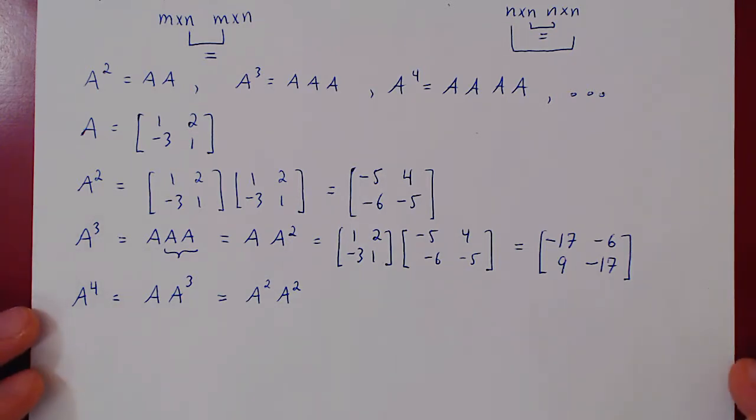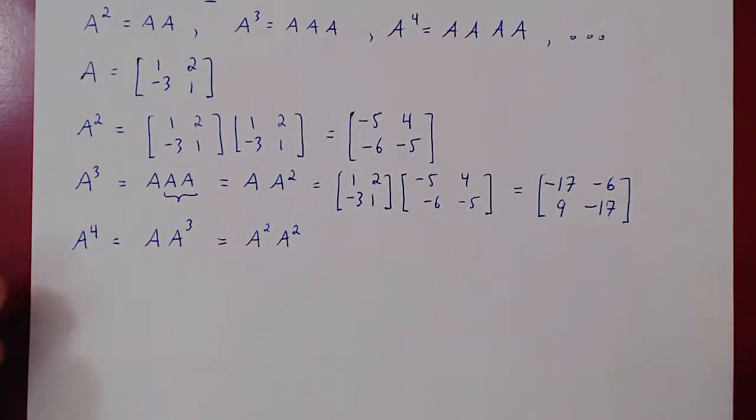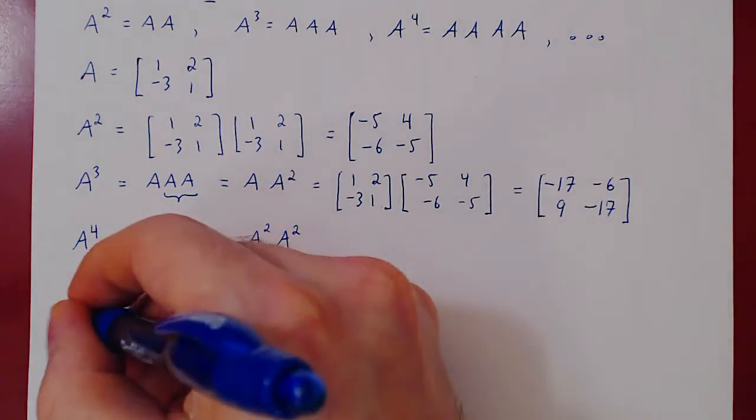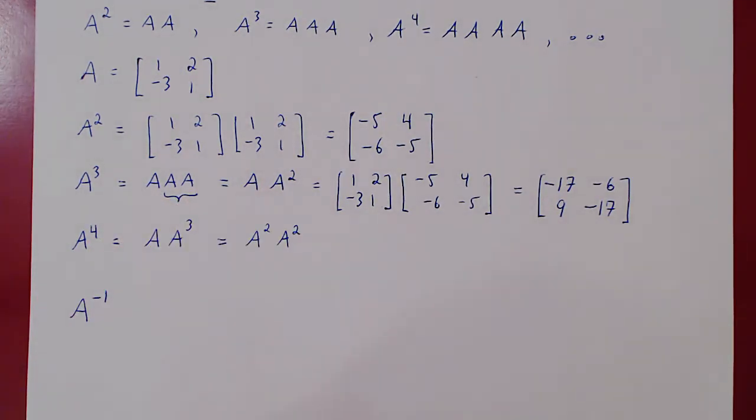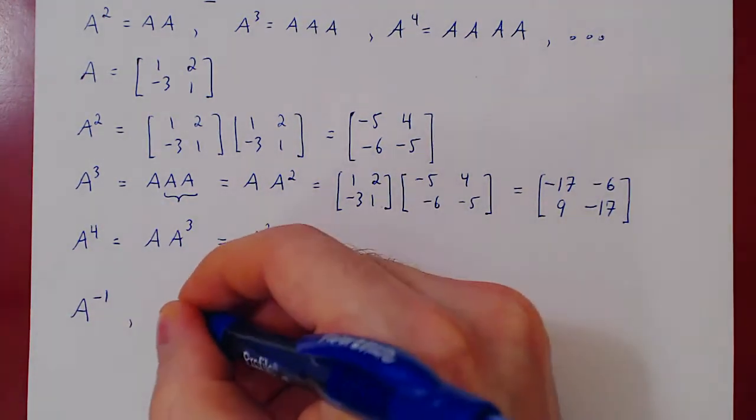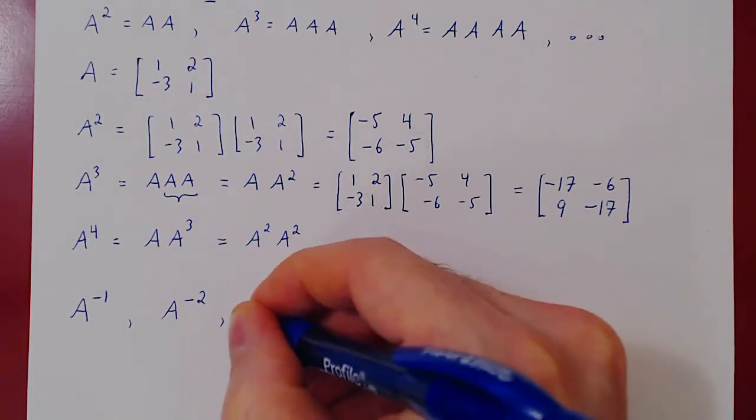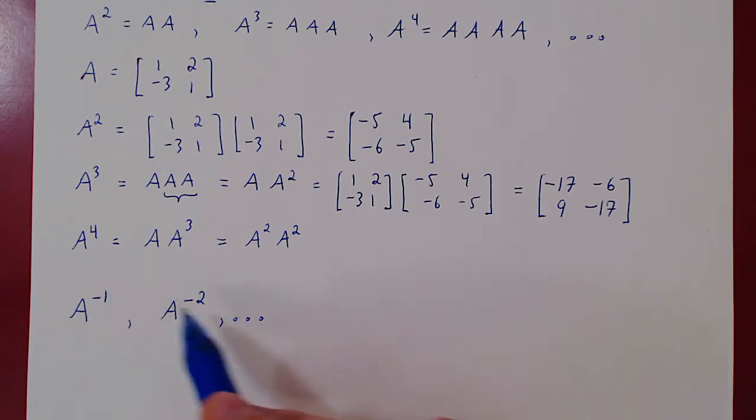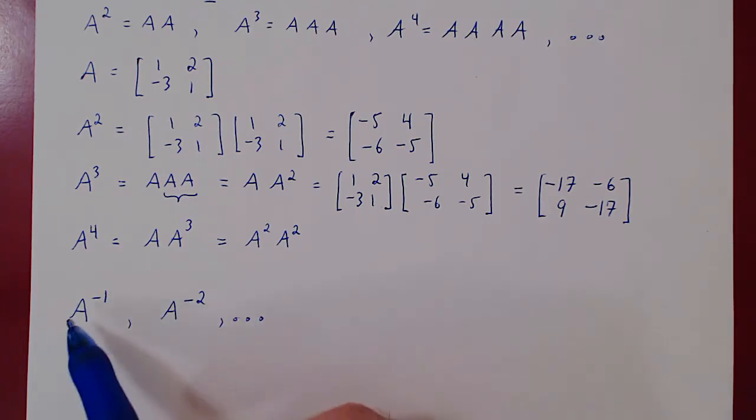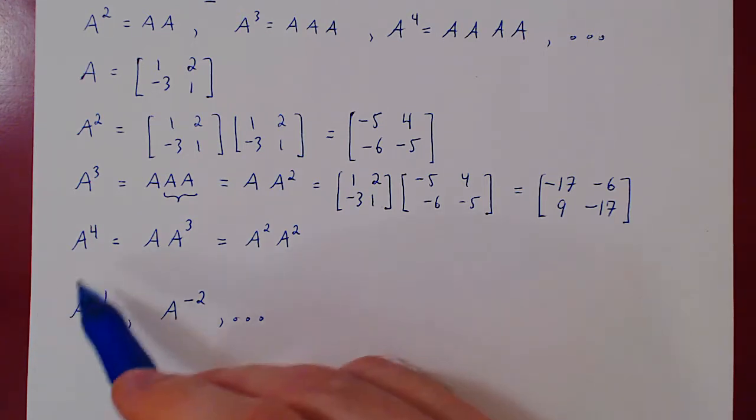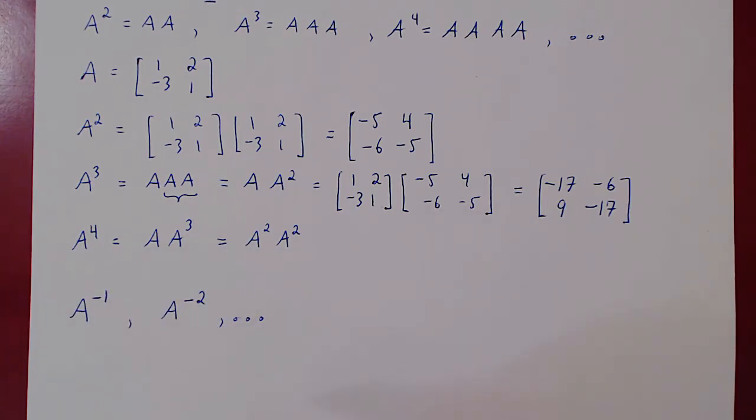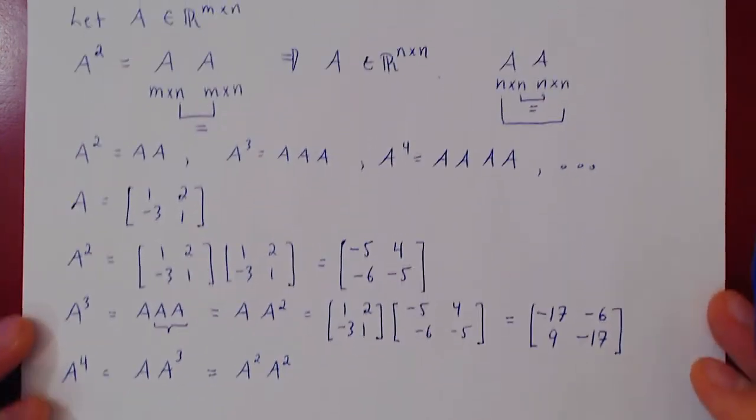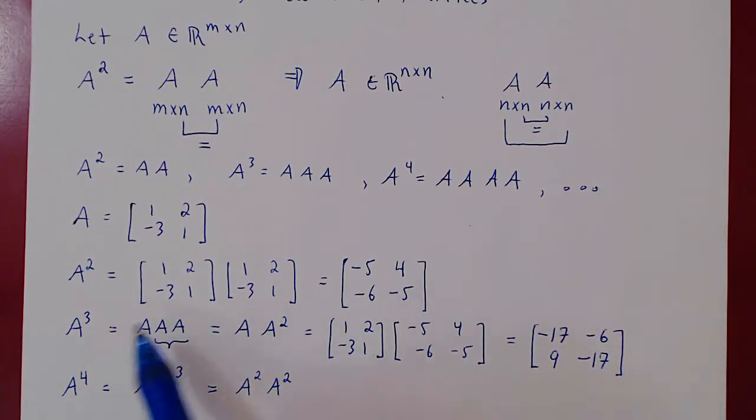You may ask, well, could we make sense, possibly, of a negative integer power of a matrix? What if we asked for something like this, a to the minus 1, or a to the minus 2, and so forth? And the answer is, we can sometimes make sense of negative integer powers of a matrix, that is a square matrix, but not always. This will be the discussion for future videos. For now, we will restrict ourselves to simply positive integer powers of matrices.